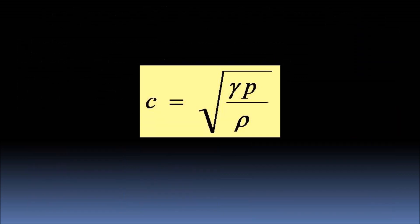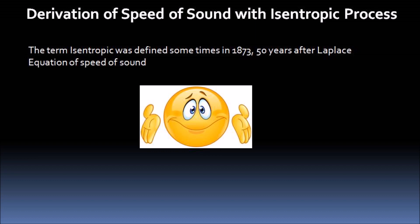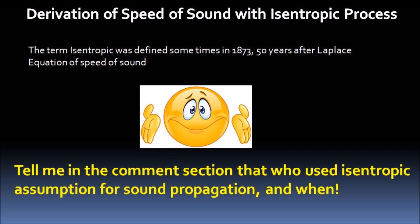The most significant point here is that nowhere the process is called isentropic. In fact, the term isentropic would wait for decades to be defined and used. The term isentropic was defined sometime in 1873, 50 years after Laplace equation of speed of sound. And I have no idea who first suggested that sound propagation is an isentropic process. I tried but could not find this info in the available literature. If you have some information about this, kindly tell me in the comment section.